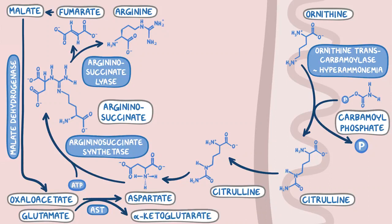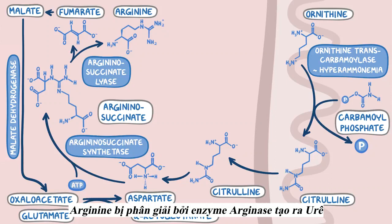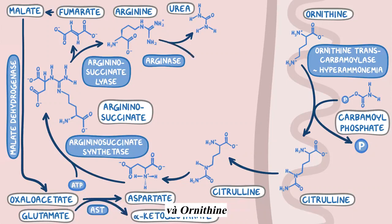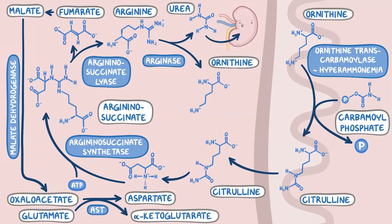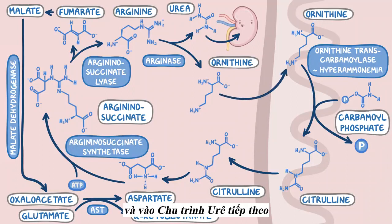Next there's arginine. Arginine is broken down by arginase to make urea, and also ornithine. Urea finally exits the liver cell, enters the blood, and gets excreted by the kidneys. Whereas ornithine heads the other way and enters the mitochondria, so that it can enter the next urea cycle as well.